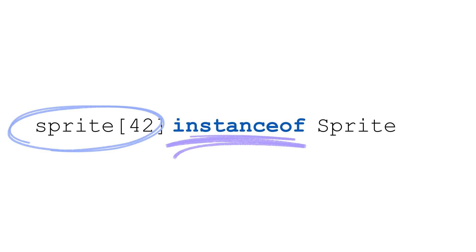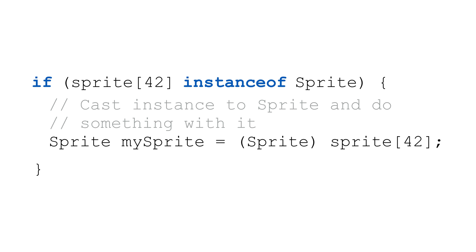We use the keyword instanceof, and finally we provide the class we're testing against. In this Java instanceof example, com.deej.Sprite. This expression returns a boolean, so we'd use it in a boolean test like this. In this code, we're testing to see if the variable sprite42 is indeed a Sprite. If it is, we cast it to a new variable and do something with it. This is a common pattern you'll see when working with an instance where you're not sure of the actual type.